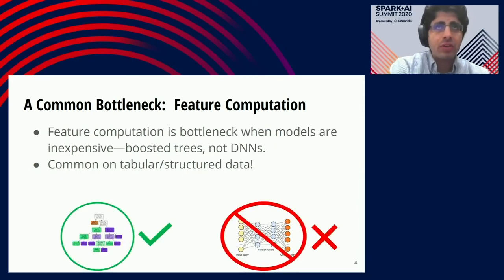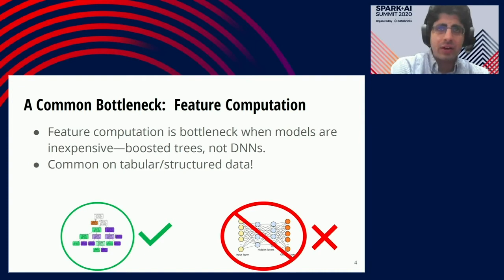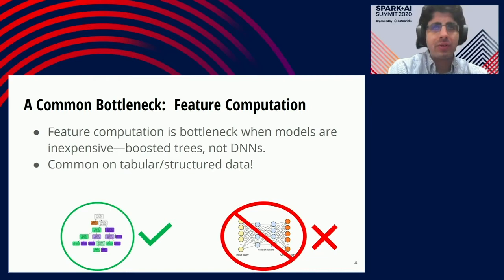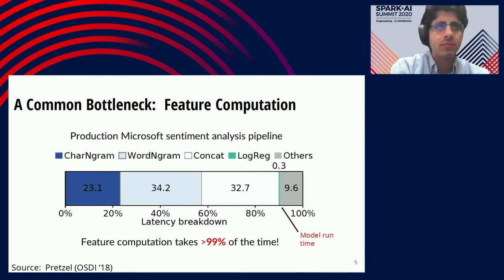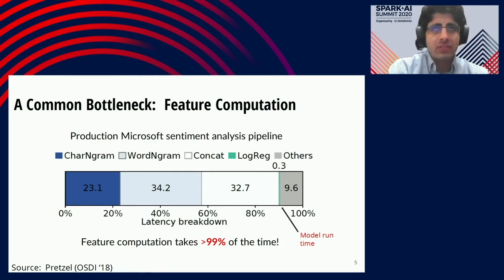Feature computation is most often a bottleneck when using inexpensive ML models, such as boosted trees or linear classifiers, but not neural networks. This happens most often when performing ML inference on tabular or structured data. Feature computation is often a problem in production. For example, in this study of production ML inference applications at Microsoft, they found that feature computation accounted for over 99% of the runtime of some applications.